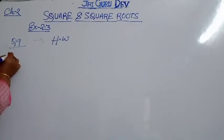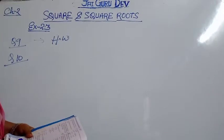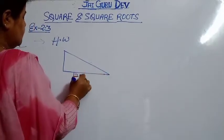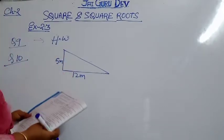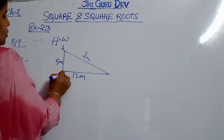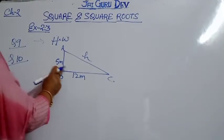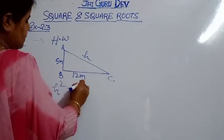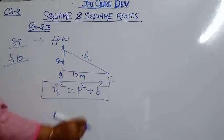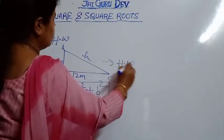Now see question number 10, which is the last question of this exercise. A right-angle triangle has sides 12 metres and 5 metres — find the length of the hypotenuse. You already know: hypotenuse² = P² + B². We did this type of problem in question 6. Question 10 is also your homework.